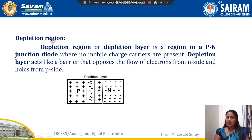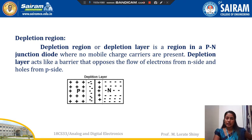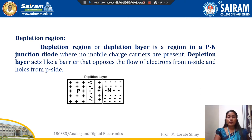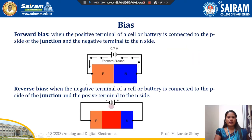Depletion region. The depletion region or depletion layer is a region in a P-N semiconductor diode where no mobile charge carriers are present. The depletion region acts like a barrier that opposes the flow of electrons from N-side and holes from P-side. The diffused electrons are on the P-side and the diffused holes are on the N-side.